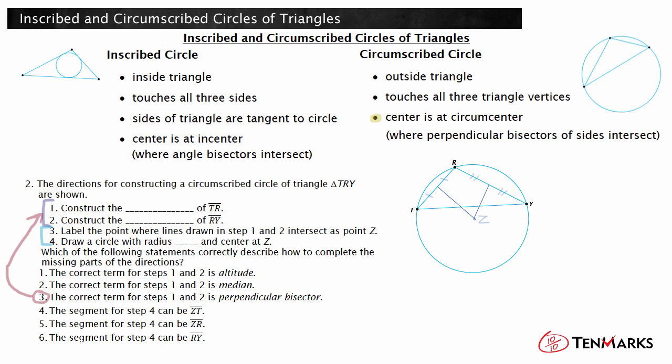The missing part in step 4 is about the radius of the circumscribed circle. Since the circumscribed circle goes through all three vertices of the triangle, the distance from the circumcenter to any of the vertices can be used as the length of the radius. Choices 4 and 5 are both segments from the circumcenter to a vertex, so they can both be used as the radius. Choice 6 is the length of one of the sides of the triangle, which is not the radius of the circumscribed circle. Now you know more about how to complete a set of directions for creating an inscribed or circumscribed circle of a triangle. See you next time!